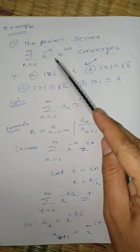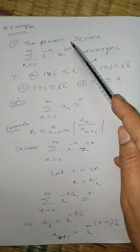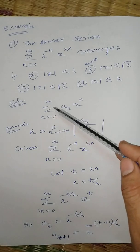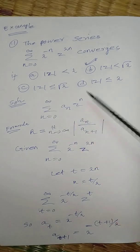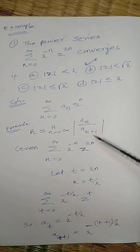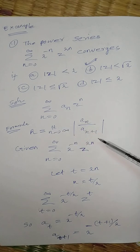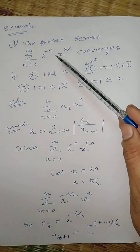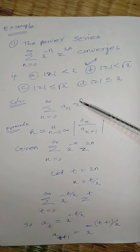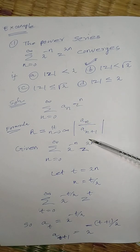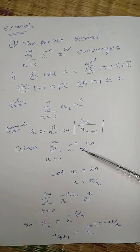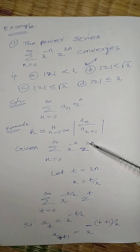So it is a power series. That is r equal to limit n tends to infinity modulus of An by An plus 1 given. That is an z power n. But here z power 2n. 2 power n, z power 2n. So it is a single.